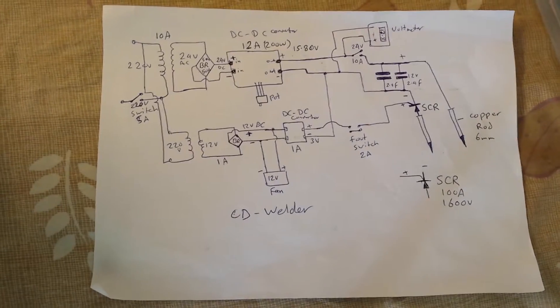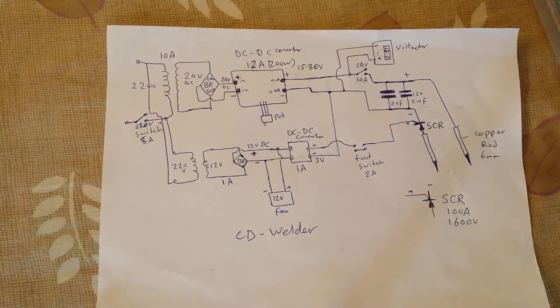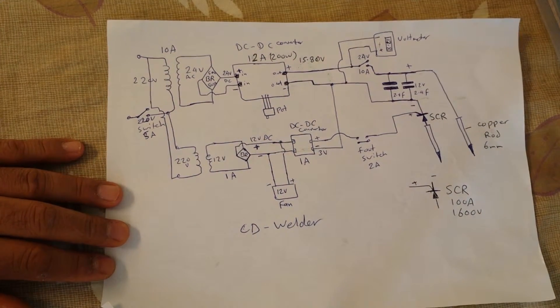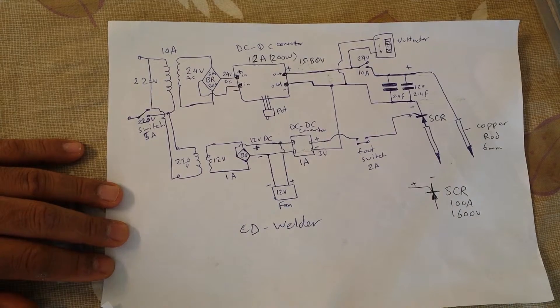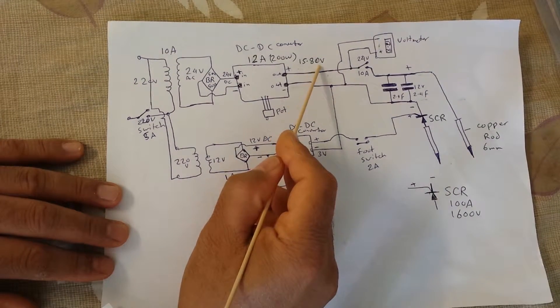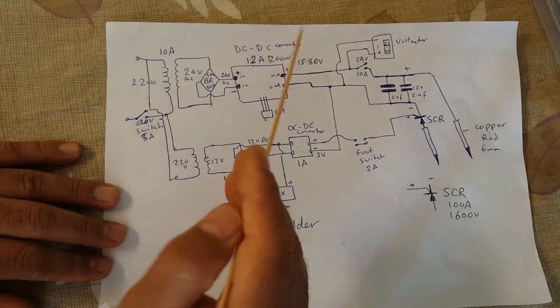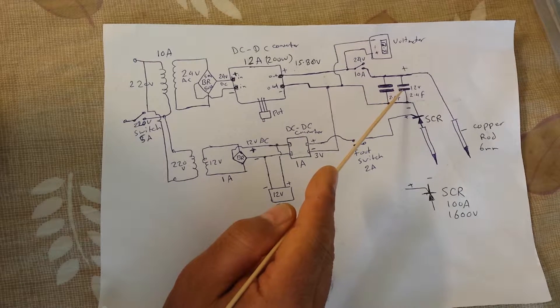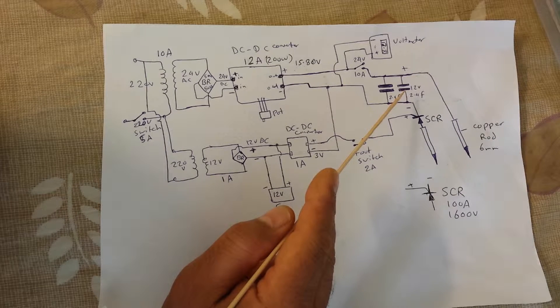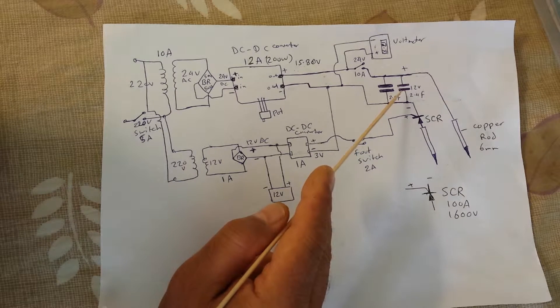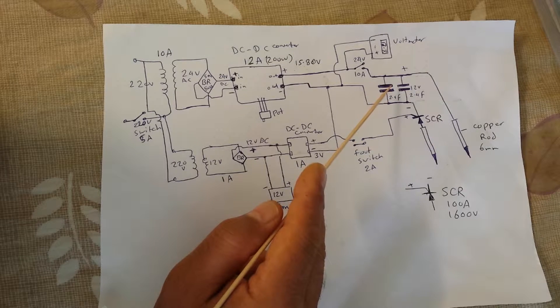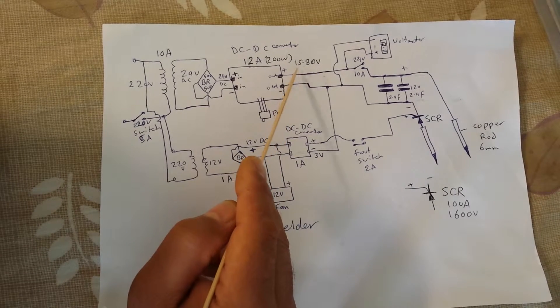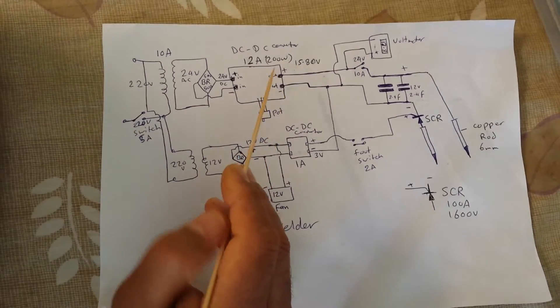Let's talk about the schematic first and see what this consists of, then we'll see the parts inside. First we need a power supply that supplies us with 15.8 volts. This is the voltage I use to charge the capacitors, because these capacitors work on a maximum of 16 volts, so I don't want to exceed this limit.